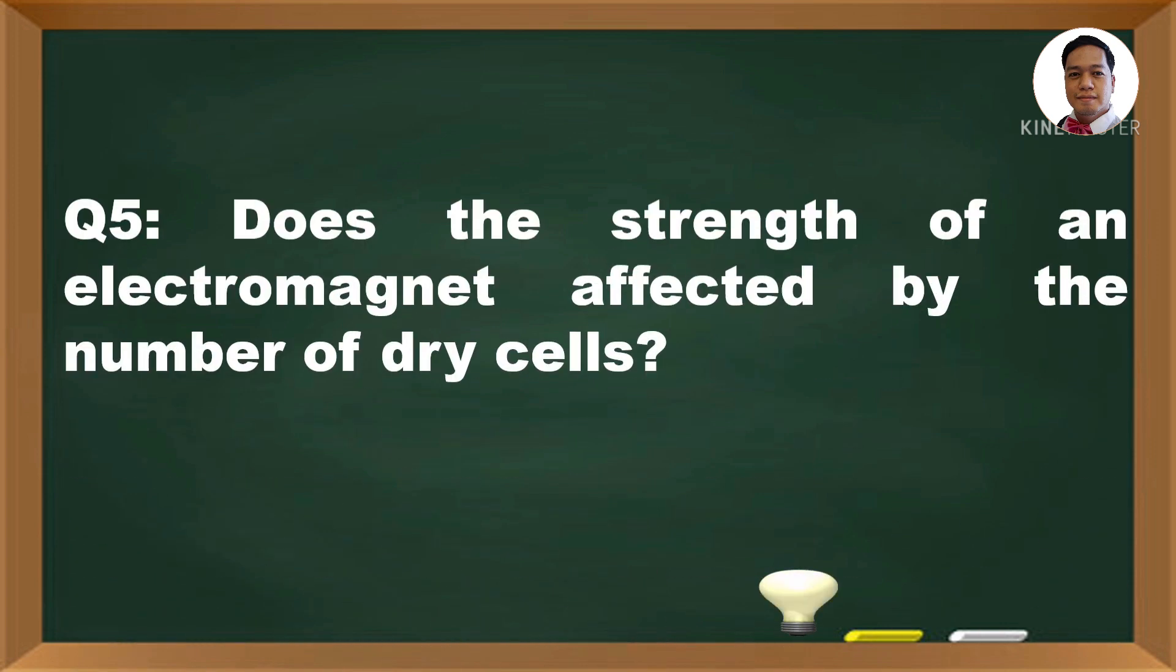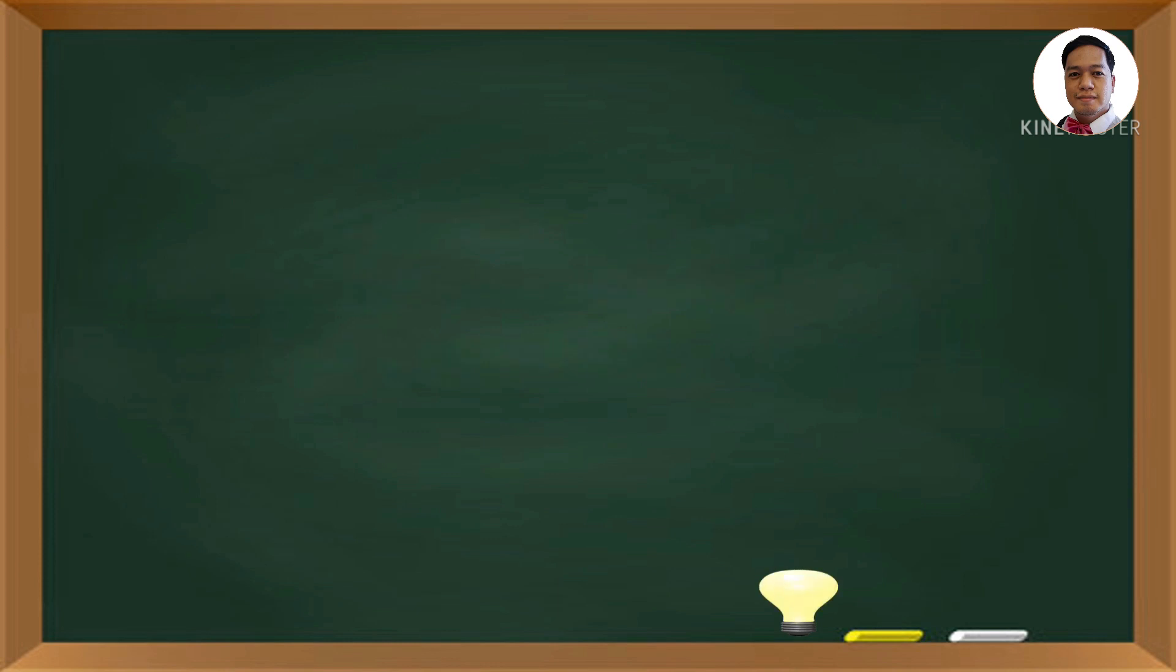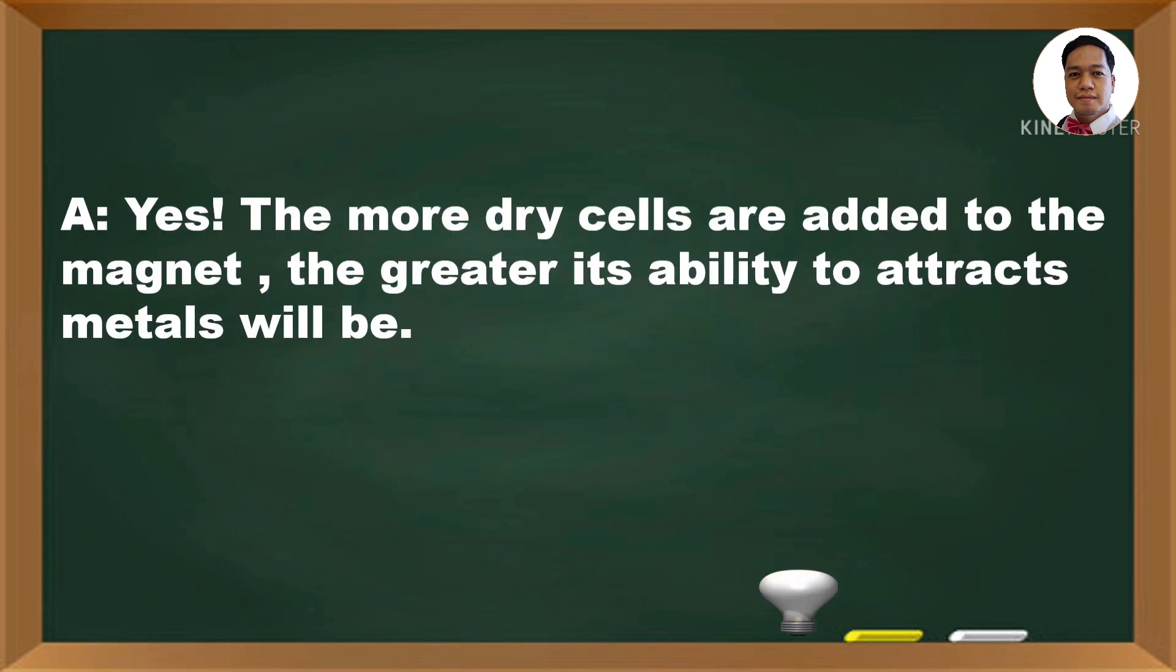Question number 5: Does the strength of an electromagnet affected by the number of dry cells? The answer is yes. The more dry cells are added to the magnet, the greater its ability to attract metals will be.